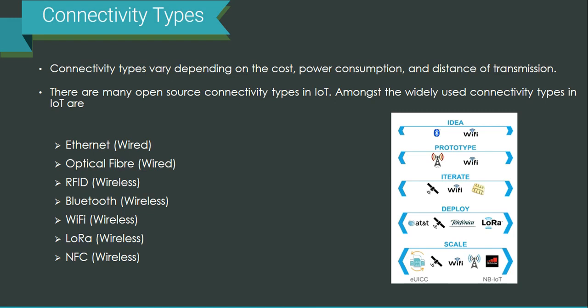Based on what application you are building, based on the cost, power consumption, and the distance of transmission, you need to choose the best connectivity type for your application. When you start with a proof of concept, you will normally go with Bluetooth or Wi-Fi because they are readily available and easy to use. But when you have to iterate and deploy further, you may have to choose LoRa or any other appropriate connectivity based on scaling and distance of transmission.